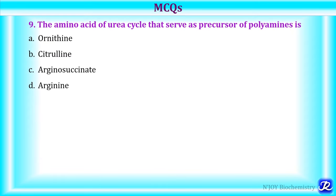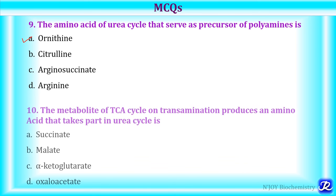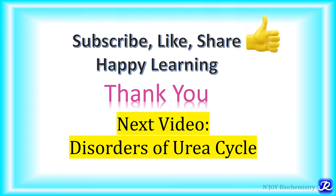MCQ 9: The amino acid of the urea cycle that serves as a precursor of polyamines is ornithine, citrulline, arginosuccinate, or arginine? Answer: ornithine. Final MCQ: The metabolite of the TCA cycle that on transamination produces an amino acid taking part in the urea cycle is succinate, malate, alpha-ketoglutarate, or oxaloacetate? Answer: oxaloacetate — it is transaminated to form aspartate, which is utilized in reaction 3 to form arginosuccinate. If you find this video useful, please subscribe, like, and share. Thank you for watching.